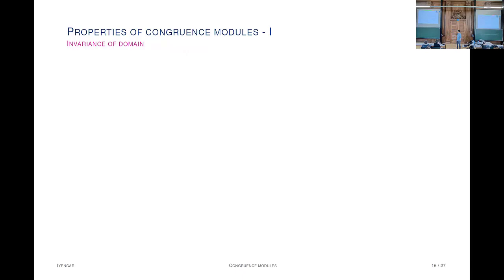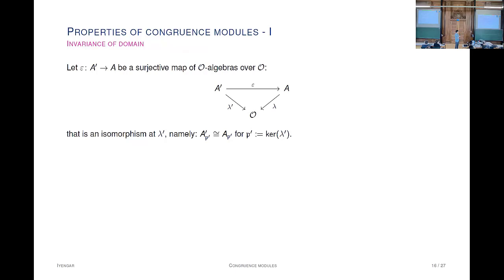Maybe one comment is in order: it might seem odd that I'm dealing with derived functors but I've thrown in something non-derived here. In fact, you can take the derived tensor product and that won't change the answer, but that requires a bit of an argument—because all the higher Tor groups have torsion, and that gets ignored when you take the torsion-free quotients. So it is the right definition from a homological algebra point of view. Because I'm assuming the ring is regular, it's not hard to check that these congruence modules have finite length.